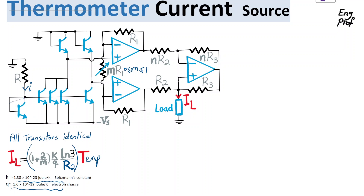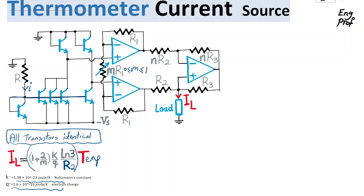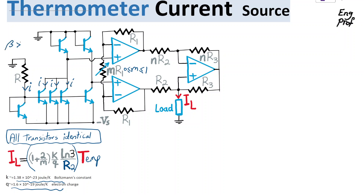All the transistors at the bottom are identical — we make the assumption that all transistors are identical. Since they share the same base-emitter voltage, because the base of all of them is connected together, as you can see, we can say VBE is the same for all of them. So if current I is going through one of them, that current I is also going through all of them. In this assumption, we are assuming that beta is high enough for all of the transistors.